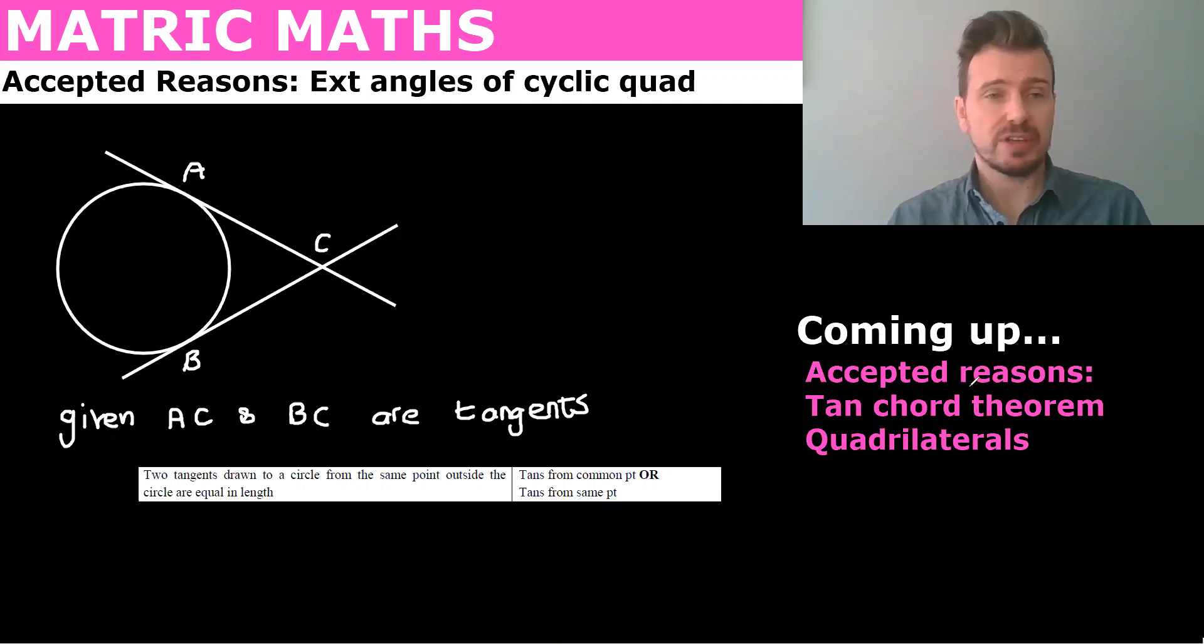And this is a nice, quick, simple one. We have a circle, and we are told that AB and BC are tangents. So if these are both tangents to the circle, we therefore know that these two lines are equal.